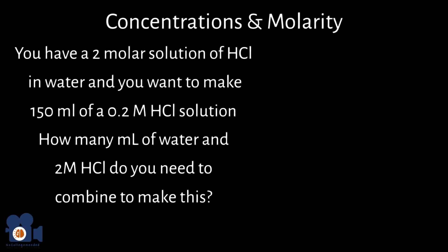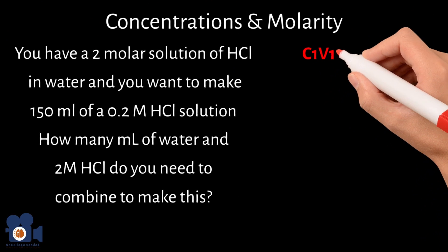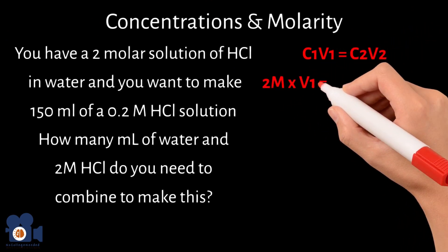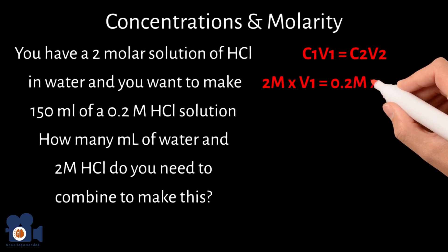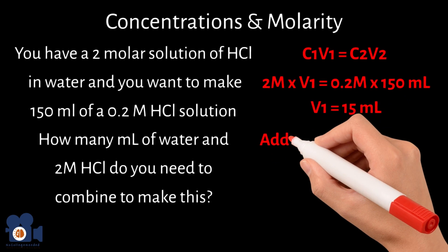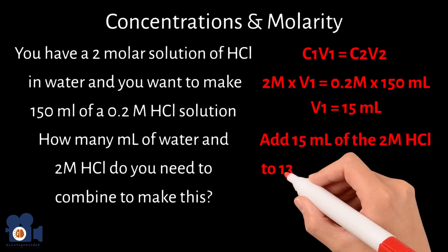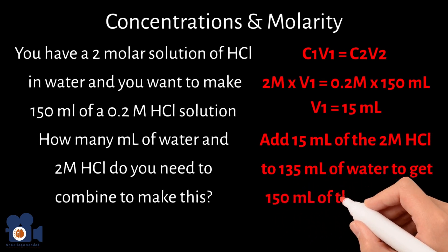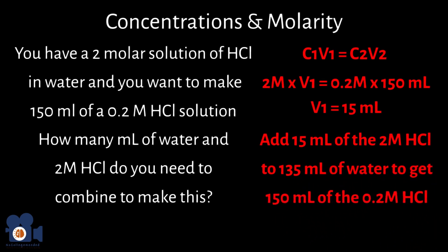Unit 4.5: using C1V1 equals C2V2, we get 2 molar times V1 equals 0.2 molar times 150 milliliters. Solving for V1, we get 15 milliliters. So, we need to add 15 milliliters of the 2 molar HCl to 135 milliliters of water to make the desired 150 milliliters of the 0.2 molar HCl solution.